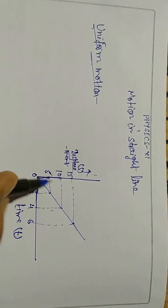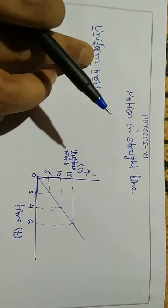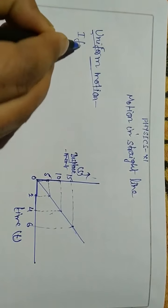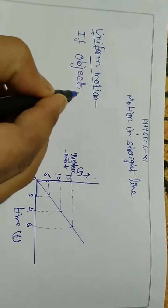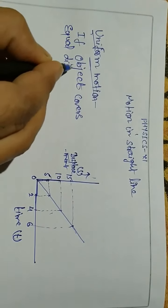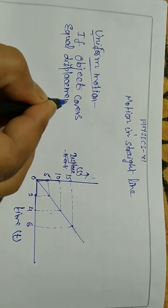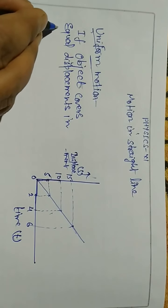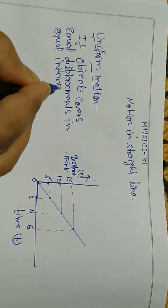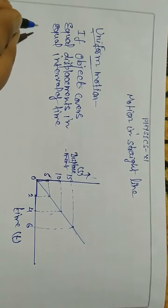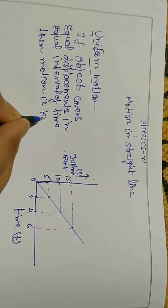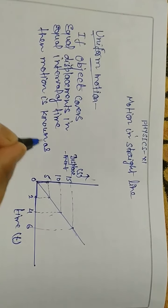So we can write: if an object covers equal distances or displacement in equal intervals of time, then the motion is known as uniform motion.